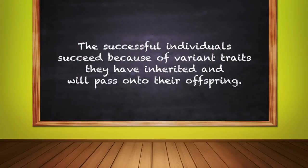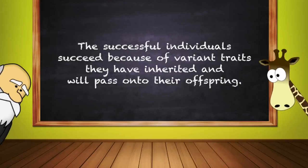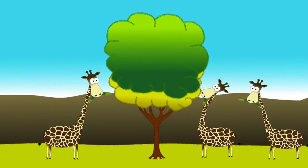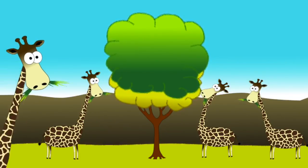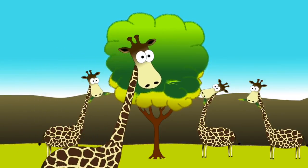Condition number four: the successful individuals succeed because of variant traits they have inherited and will pass on to their offspring. Giraffes with the longer neck advantage are in better health and able to pass this feature to their offspring. Because this trait is more successful than shorter necks, more individuals in the population have it. Over time, this process can result in populations that specialize for particular environments and may eventually result in emergence of new species.